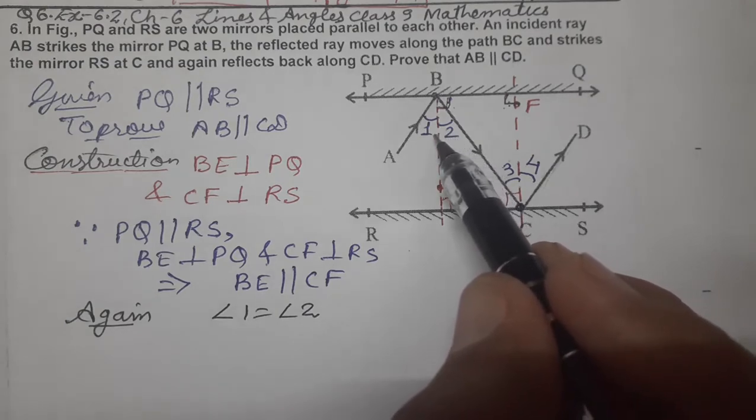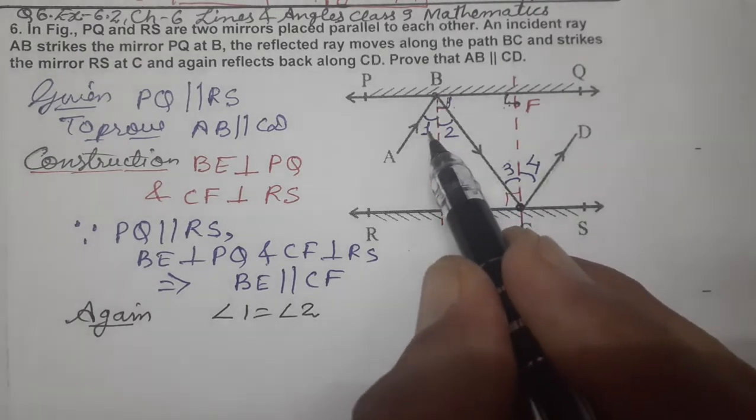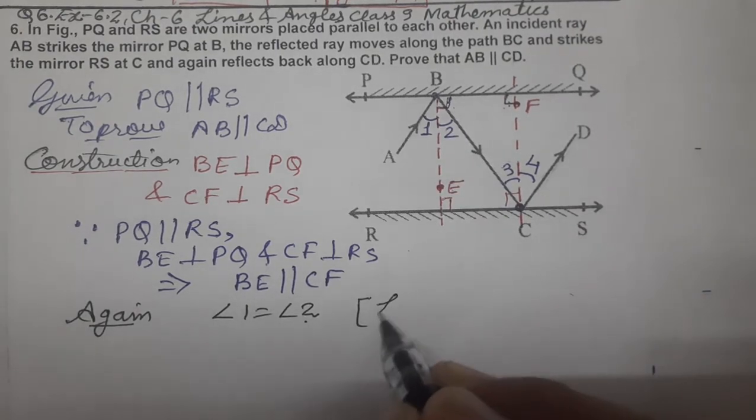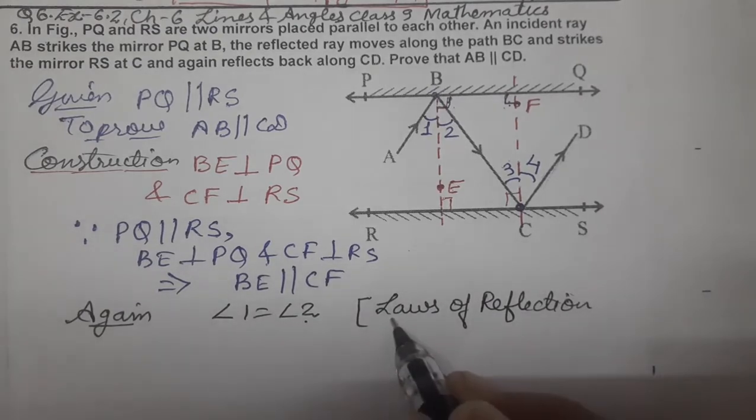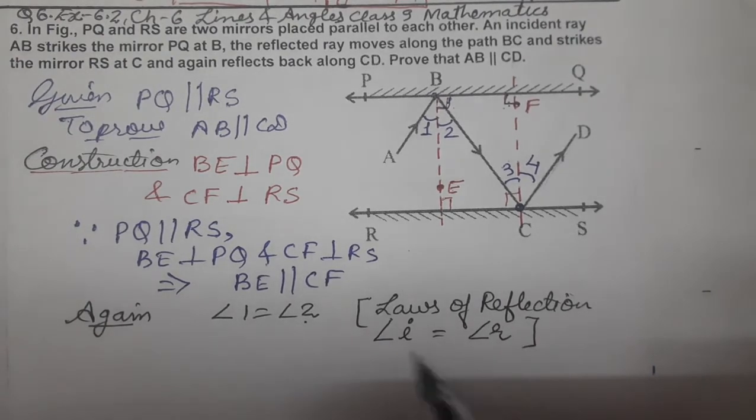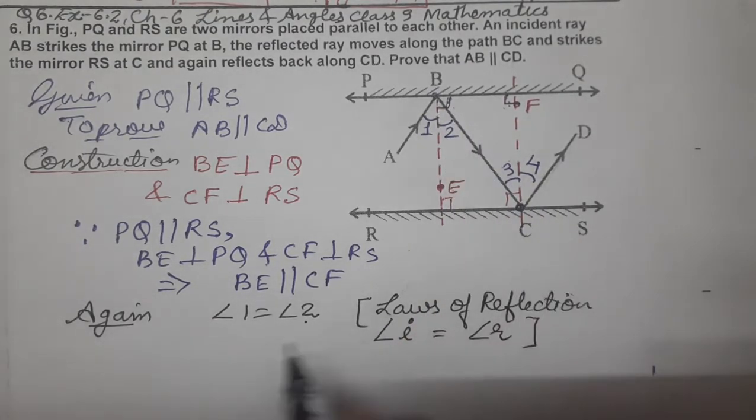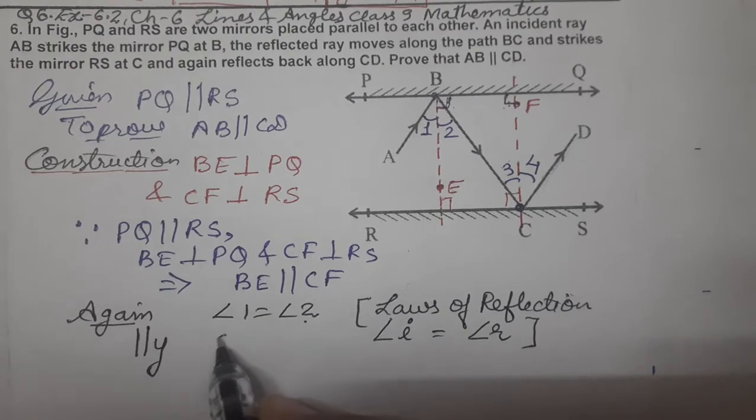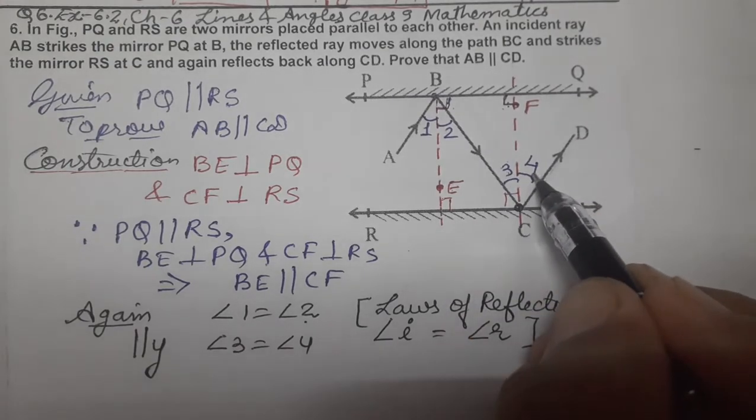Now we know about the laws of reflection. Again, angle 1 equals angle 2 by law of reflection. Angle of incidence equals angle of reflection. This is the normal. The incident ray and reflected ray - angle of incidence I equals angle of reflection R.